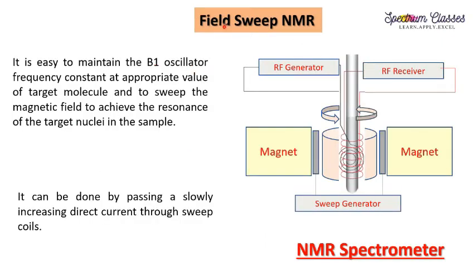Now we will discuss the field sweep NMR spectrometer. Field sweep NMR spectrometers are easier to handle because it is easy to maintain electronically the B1 oscillator frequency constant at an appropriate value for the target molecule, and to sweep the magnetic field to achieve resonance of the target nuclei. In this case, we keep the RF oscillator frequency constant and change the B0 field.